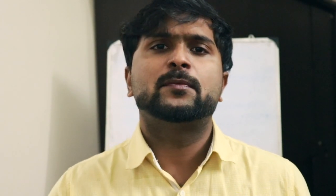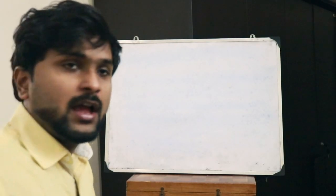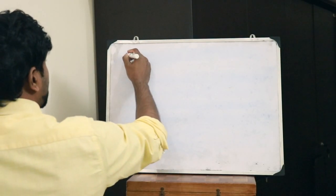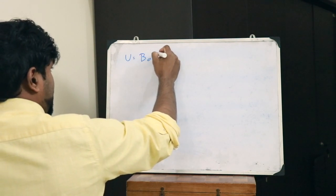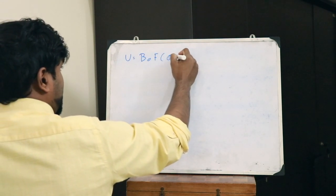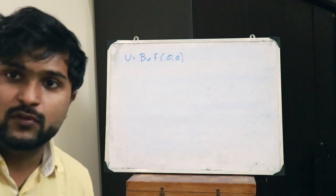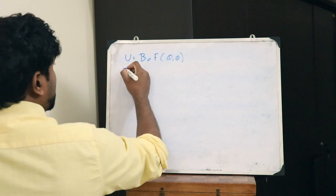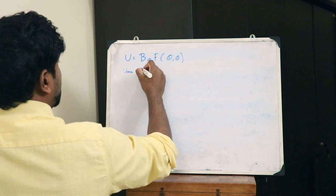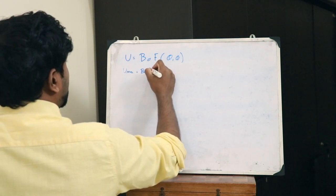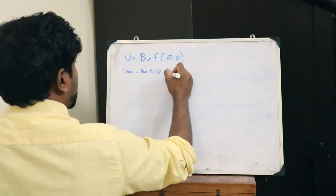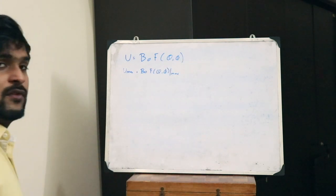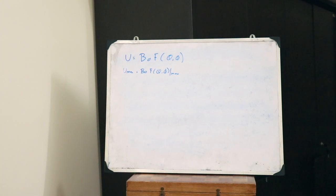Now let us derive an expression for beam solid angle. The expression is derived from the radiation pattern. For a particular antenna, the radiation intensity U is given, and U_max is equal to B0 into f(θ, φ) whole max.